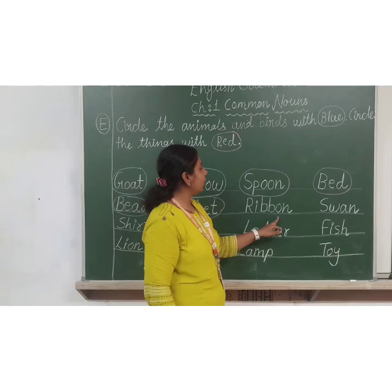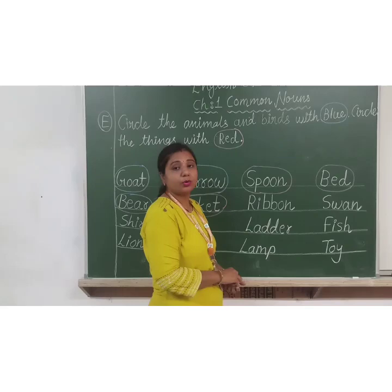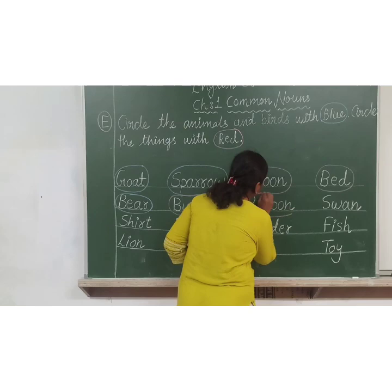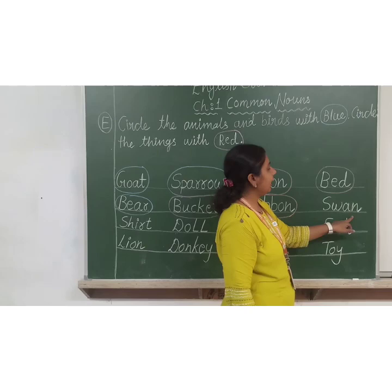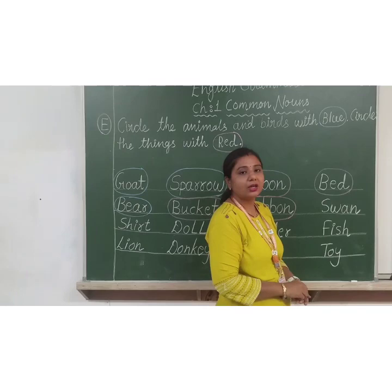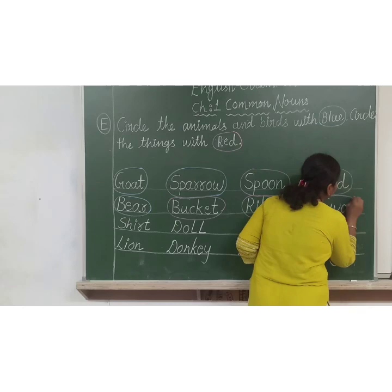R-I-B-B-O-N. Ribbon. Here same — it is a thing, so you have to circle with red color. S-W-A-N. Swan. Swan is a bird. So here you have to circle with blue color.